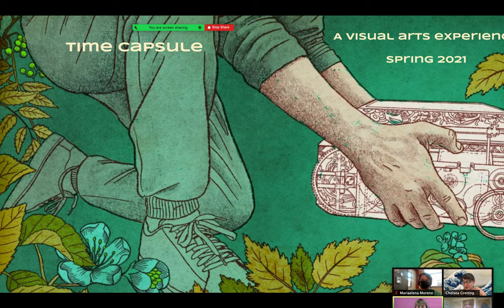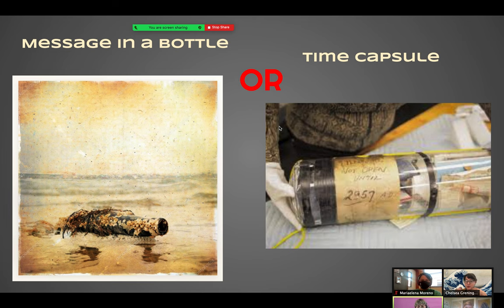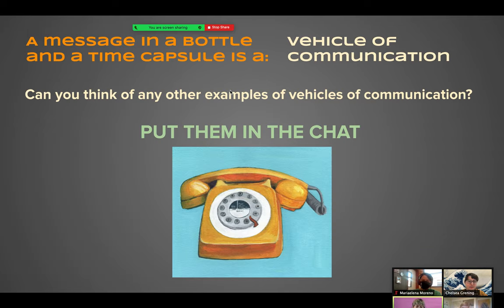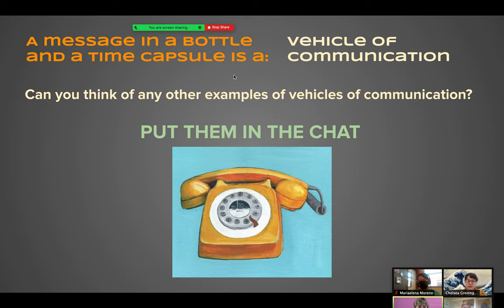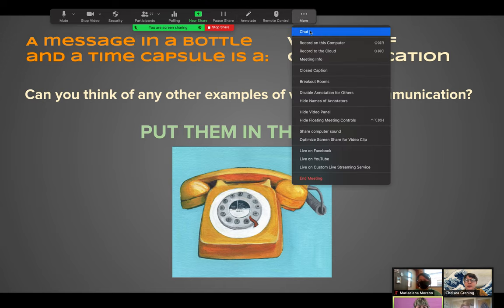So, time capsules — what is a time capsule? We'll talk about that as well. You're going to make one or the other; you're not making both. Unless you're feeling really ambitious, for the time period of this project you'll probably only have time to make one. A message in a bottle and a time capsule are both vehicles of communication. Can you think of any other examples of vehicles of communication?